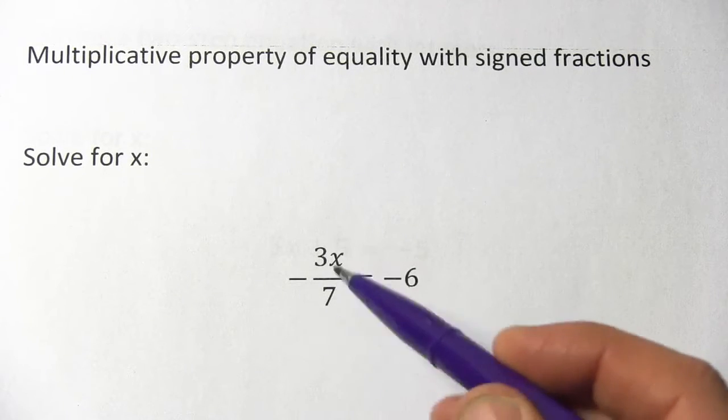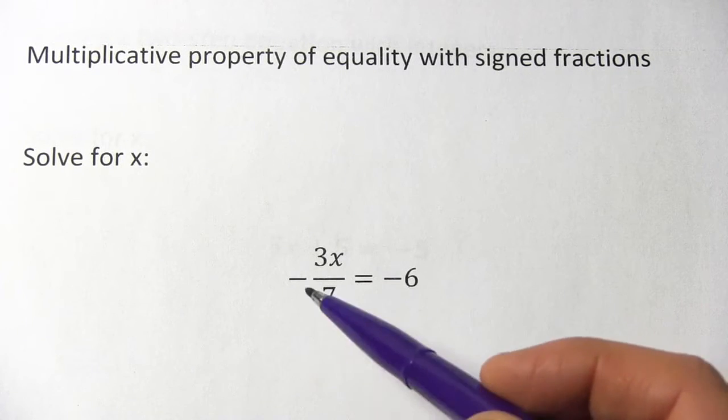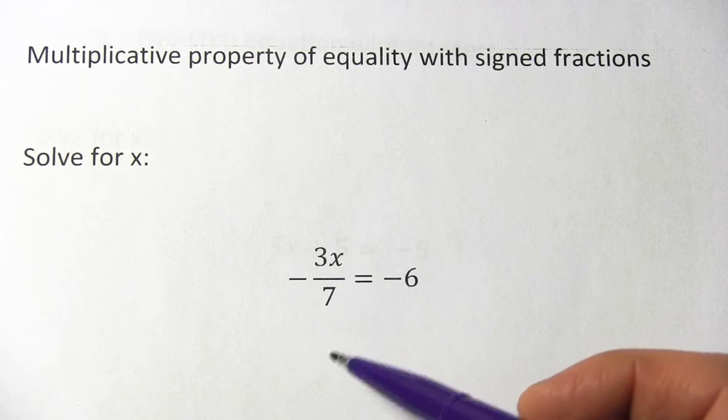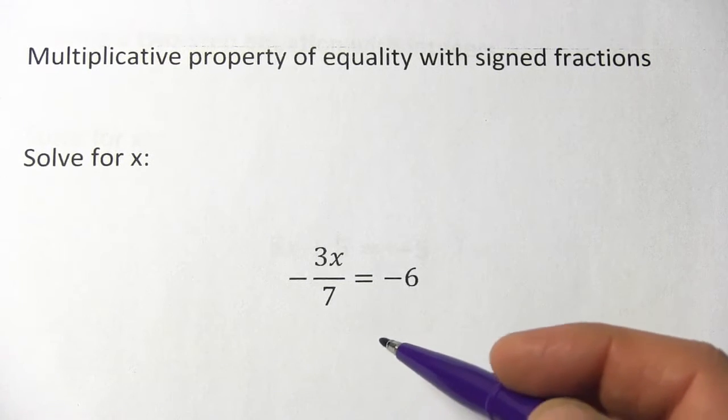Here we need to solve for x, and x is mixed up with this fraction, negative 3x over 7 equals negative 6. So how do we deal with that?